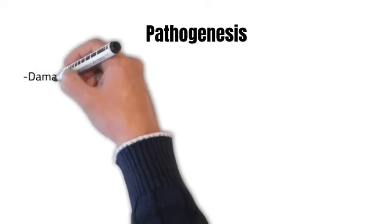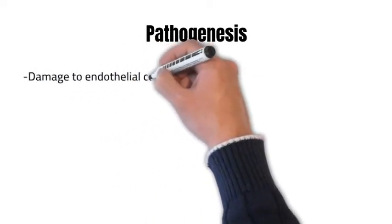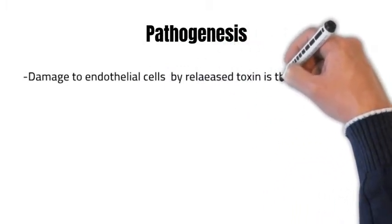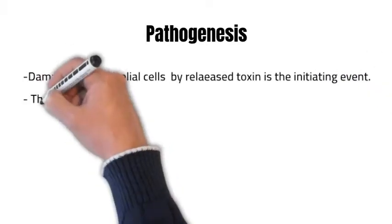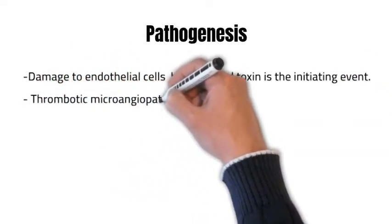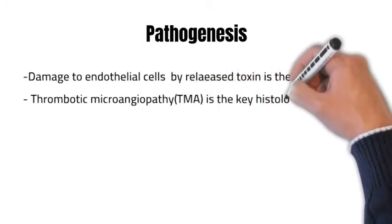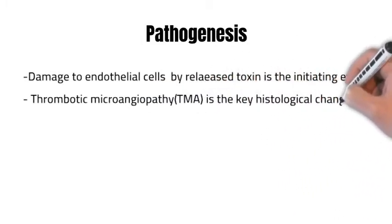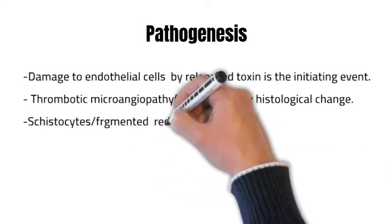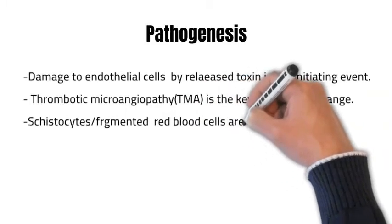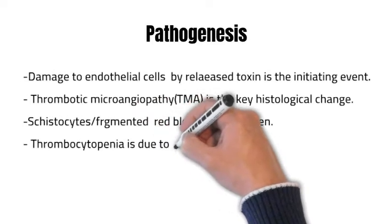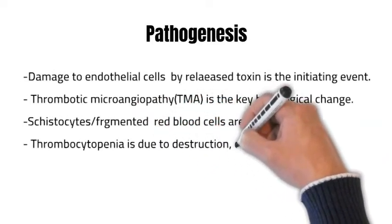The pathogenesis commences with the damage to the endothelium by the released cytotoxin. These toxins lead to endothelial cell damage, causing increased generation of microthrombi. Microthrombi are commonly seen in the glomerular capillary. Schistocytes, or fragmented RBCs, are seen due to the friction of circulating RBCs. Thrombocytopenia is due to the increased destruction and consumption of platelets.